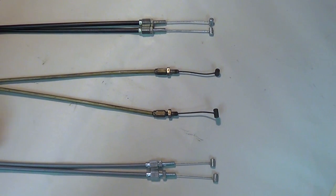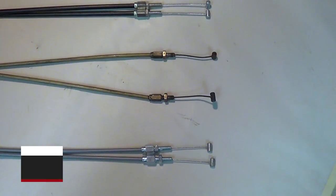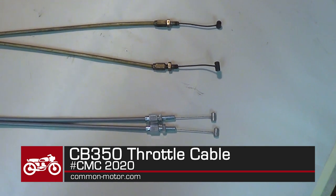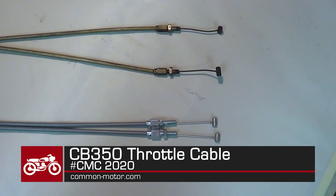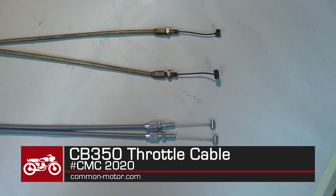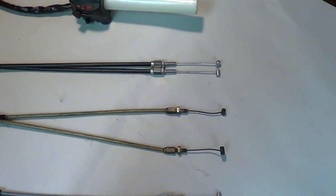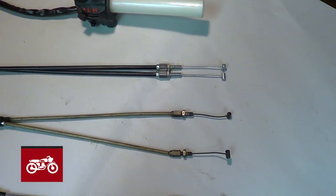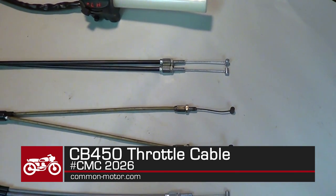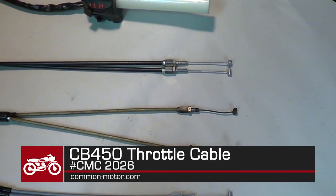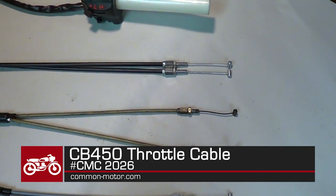So new cable here, just below it - the ends and everything are nice and even. You're starting out with a clean slate. For the 350, that part number is CMC part number 2020. Just above it we have a 450 throttle cable. It's almost the exact same setup. Basically the links are a little bit different for the 450. That's CMC part number 2026.